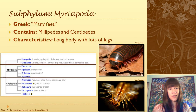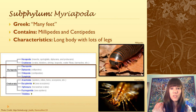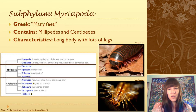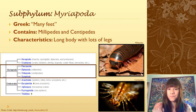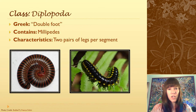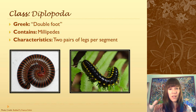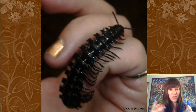We've made it out of the arachnids and now we're in the subphylum Myriapoda, which in Greek just means many foot or many leg. It contains the millipedes and centipedes — the things that have lots of legs. The characteristics are that they have a long body with lots of legs attached. First we'll talk about millipedes, which are in the class Diplopoda, meaning double foot — for each segment you have two pairs of legs attached to it, and that's how you can tell them from centipedes.